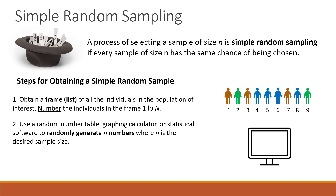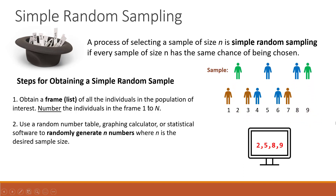The second step is to use either technology, a calculator, or statistical software to randomly generate numbers that determine who's going to be in the sample. So if the desired sample size is 4, you use technology to generate 4 random numbers. Let's say the computer randomly generates numbers 2, 5, 8, 9 — those individuals will form the sample. Simple like that, and this is the main advantage of this sampling method.